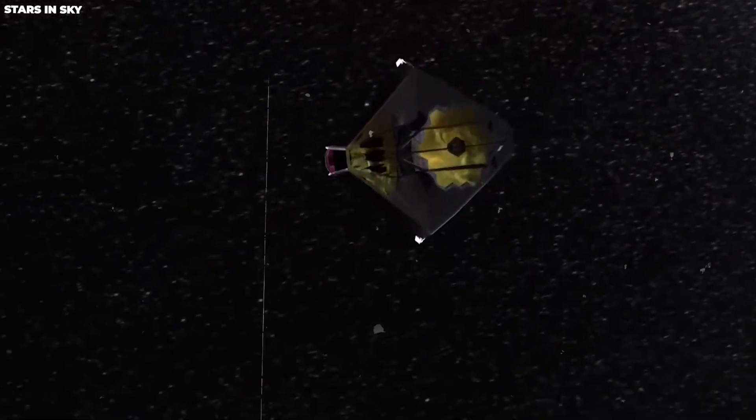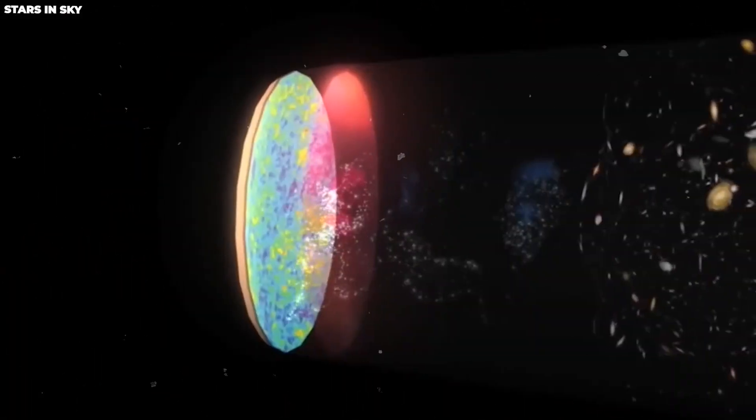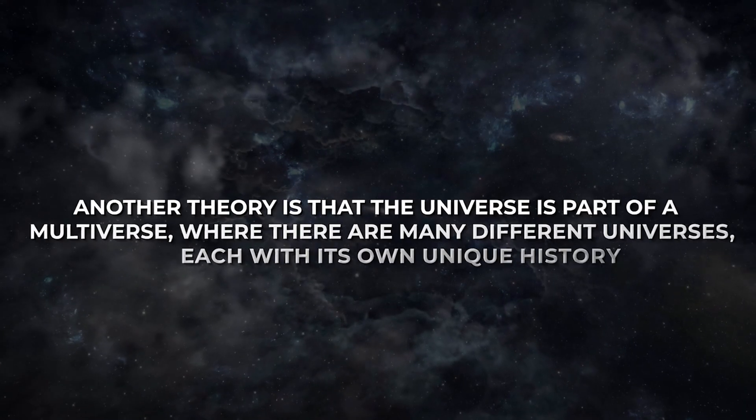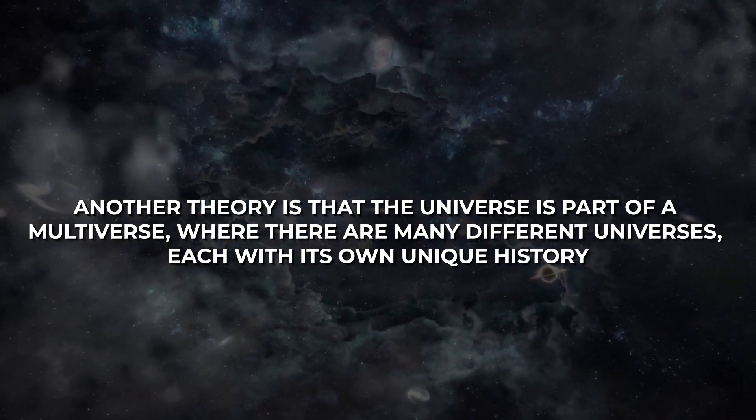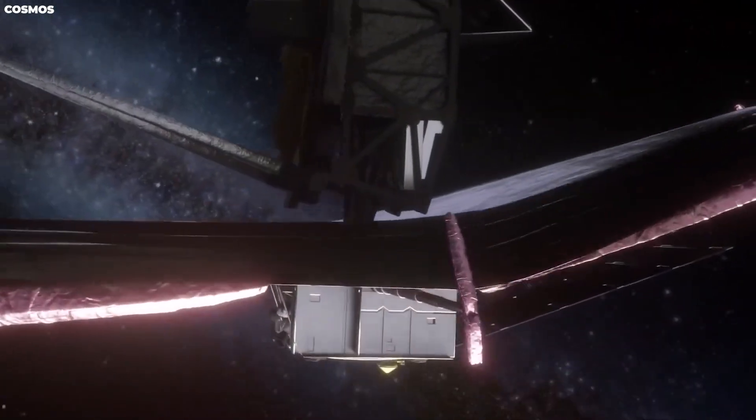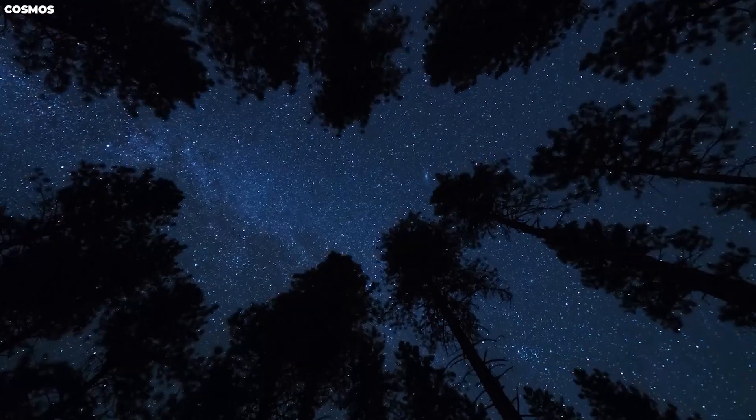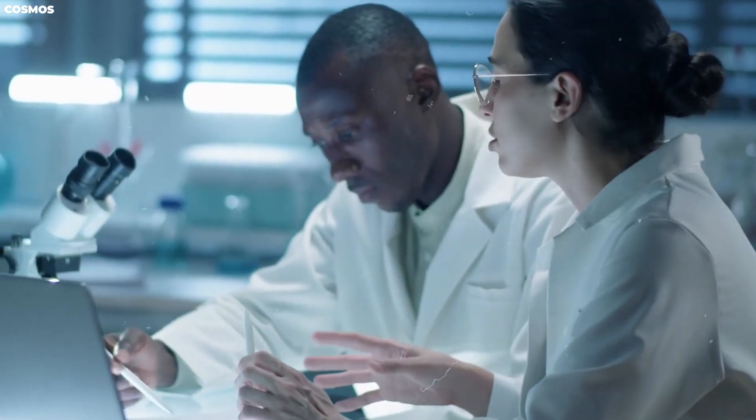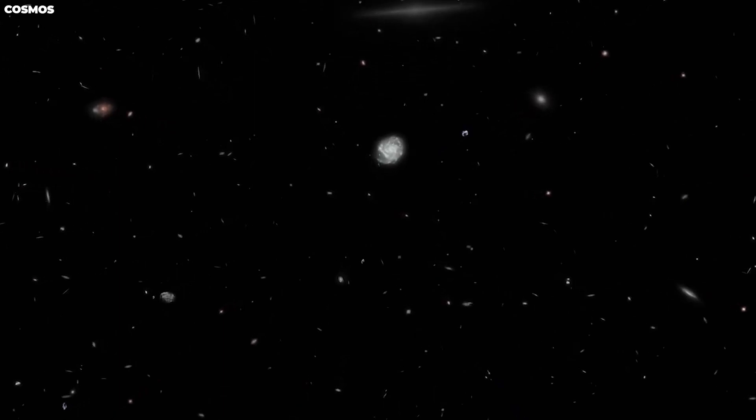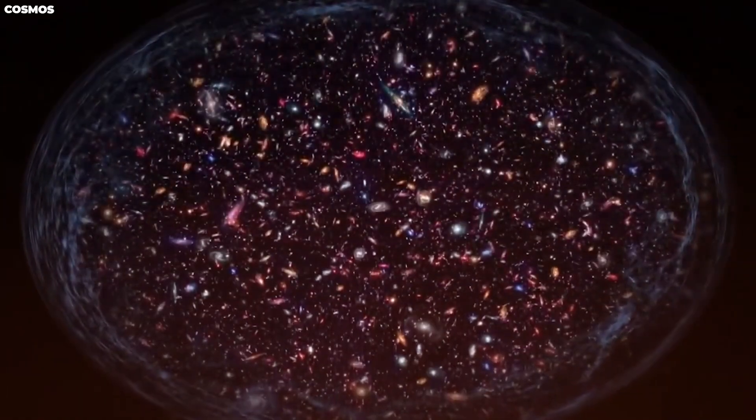There are a number of theories that could explain the universe's origins if the Big Bang Theory is wrong. One theory is that the universe is eternal and has always existed. Another theory is that the universe is part of a multiverse where there are many different universes, each with its own unique history. Still, another theory is that the universe was caused by a quantum fluctuation, a random event that occurred in the fabric of space-time. When you question the Big Bang Theory, some scientists don't like it, and it can be tough to get the money you need to do your science experiments. Science is all about exploring new ideas, so it's important that everyone gets a chance to speak up and be heard, no matter what they believe.